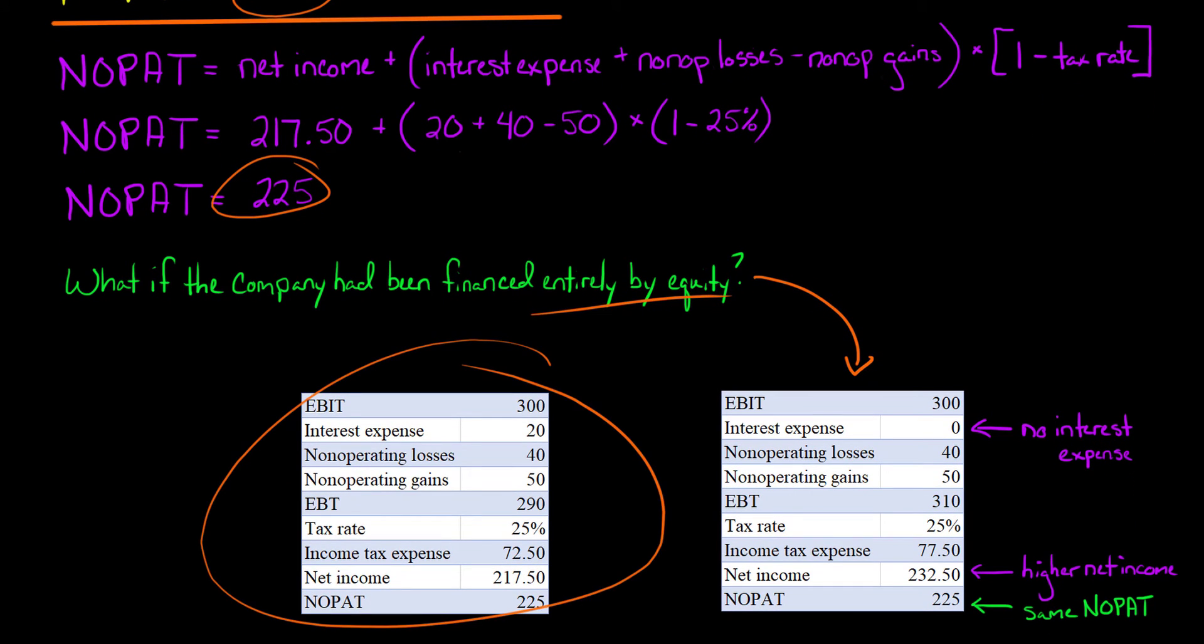What I've got here, right here, is the actual original data that I gave you, and then here is the scenario if the company was financed entirely by equity. So if it was financed entirely by equity, interest expense would be zero, because there's no debt, so there's no interest expense. That means that the company's net income would be higher. See that there's a net income of $232.50, whereas before, when we had some interest expense, it ended up being a net income of just $217.50. So we see that by not having any debt financing, just entirely equity financing, the company's net income turns out to be higher.